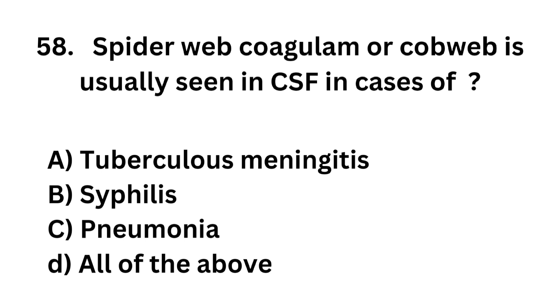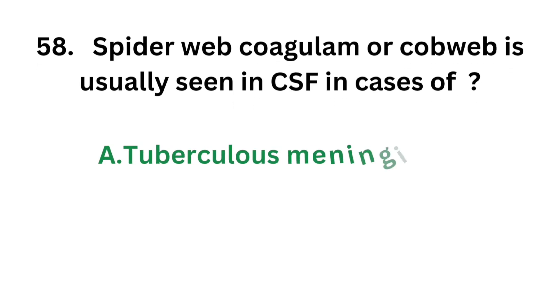Question number 58. Spiderweb coagulum or cobweb appearance is usually seen in CSF in case of: Option A - Tuberculous meningitis; Option B - Syphilis; Option C - Pneumonia; Option D - All of the above. The correct answer is Option A, Tuberculous meningitis. Spiderweb coagulum or cobweb appearance is usually seen in CSF in case of tuberculous meningitis.